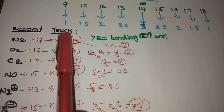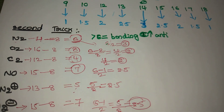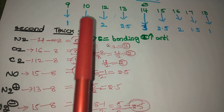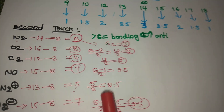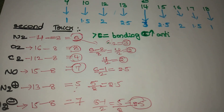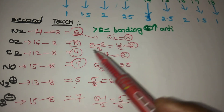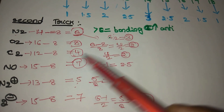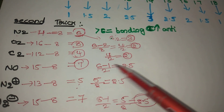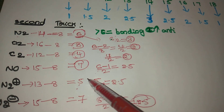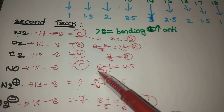To summarize the second trick: count the electrons, subtract from 8. If the result is 6 or below, divide by 2 for bond order. If above 6, take 6 as bonding electrons and the rest as anti-bonding; compute (bonding − anti-bonding) ÷ 2 for bond order.